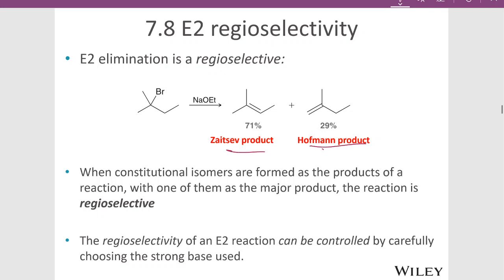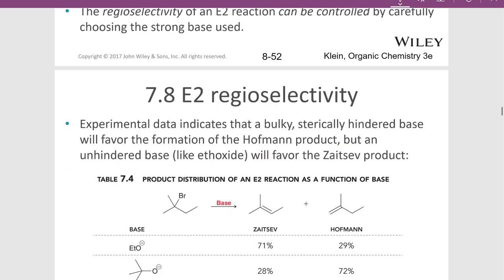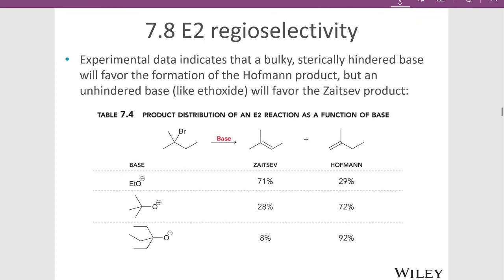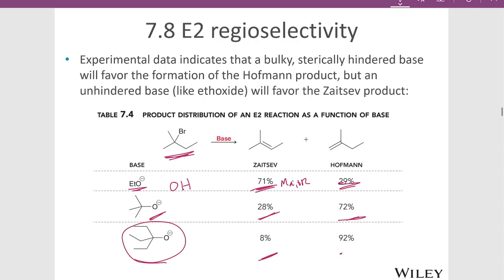If we can form a Zaitsev product over a Hoffman product preferentially, then the Zaitsev product will form. But we can control the formation of the product by using different types of bases. For a small base like ethoxide or even hydroxide, we're going to see the Zaitsev product being the major product. We can see here for this starting material with ethoxide, we have 71 percent Zaitsev and 29 percent Hoffman. But if we use a bigger base like potassium t-butoxide, we get 28 percent Zaitsev and 72 percent Hoffman. And if we use an even larger base, we get only 8 percent Zaitsev and 92 percent Hoffman.